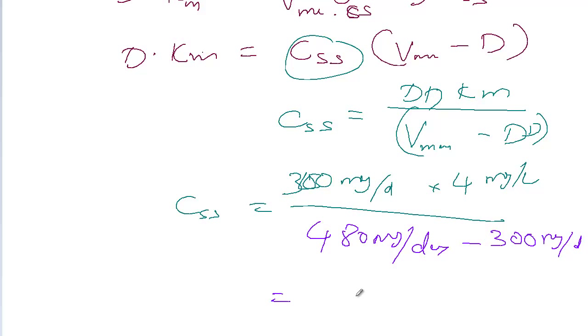If you solve this one, 300 times 4 is 1200, and 480 minus 300 is 180.